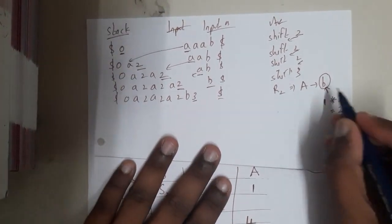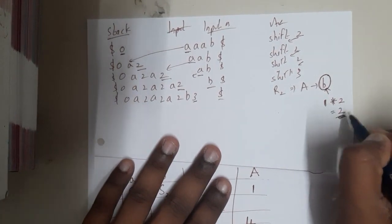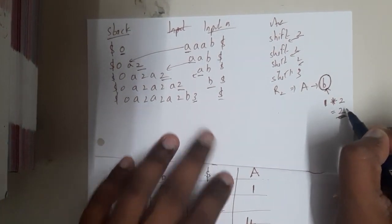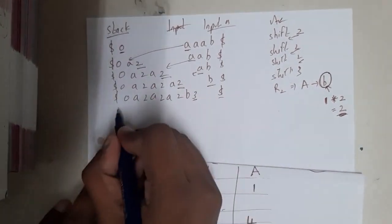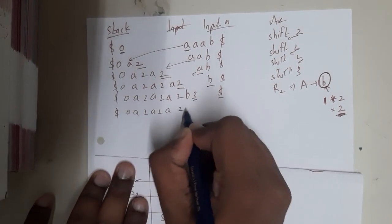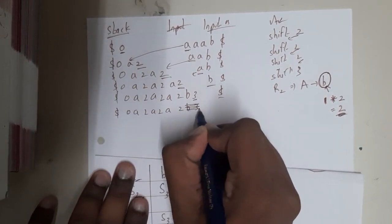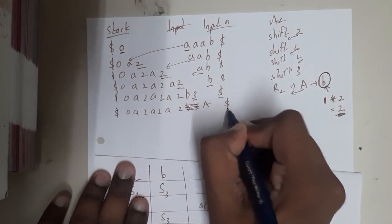...be popping two elements out of the stack. So basically on RHS we are having only a single element, so one into two is nothing but two. That is the reason why you will be popping two elements from here. So once you pop two elements, let me write it again so that will be clear for you: a2a2b3. So we'll be popping the two elements, and you will be pushing this element first - a dollar.